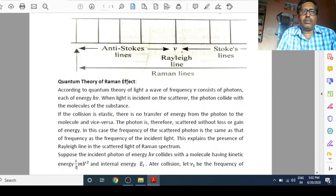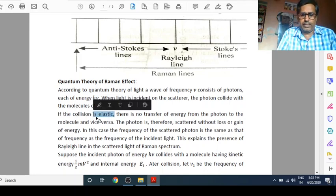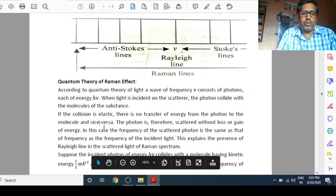Now we are going to give a quantum theory. We will explain Raman effect on the basis of quantum theory. As you know from the quantum theory, a wave of frequency nu consists of photons. In general, we say that light is made of photons. And each photon has energy h nu. What is h? Planck's constant. What is nu? Frequency.